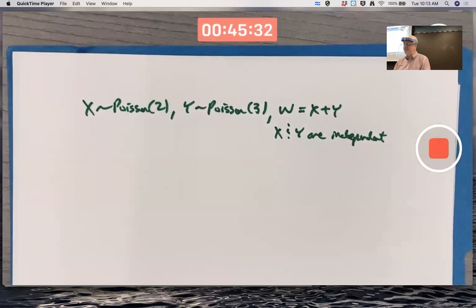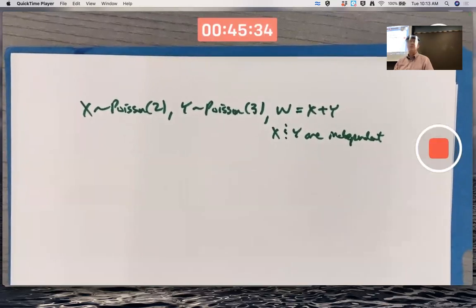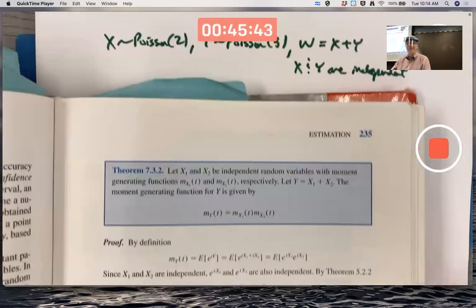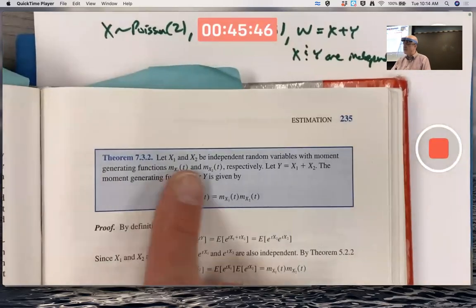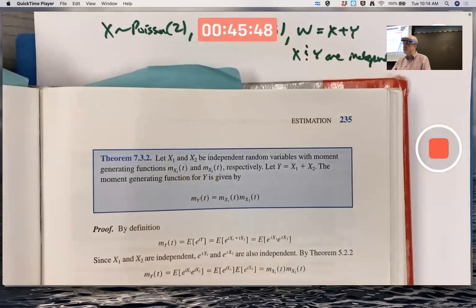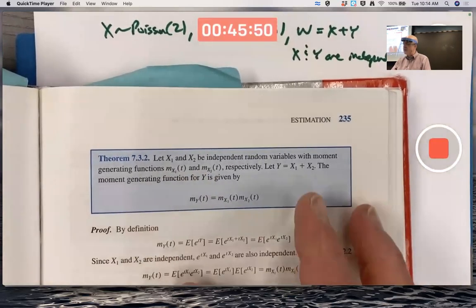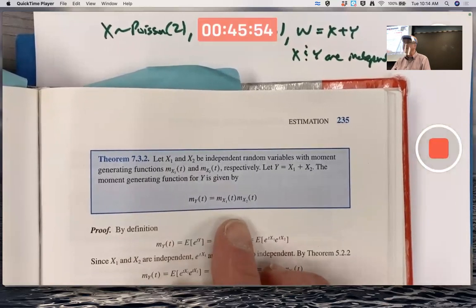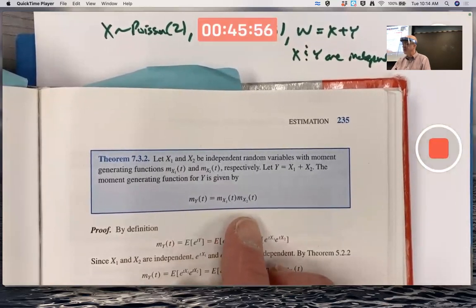Anyway, let's use the moment generating function approach based on, again, the fingerprint theorem and this theorem, chapter 7. X1 and X2 are independent random variables with known moment generating functions and Y is their sum. Then the moment generating function for Y is the product, not the sum, the product of the moment generating functions for the variables that you're adding.